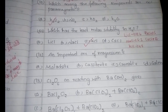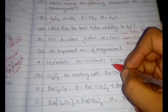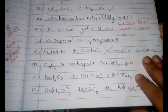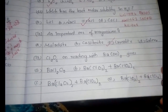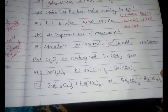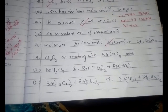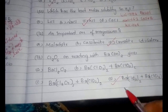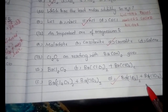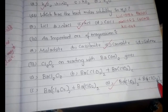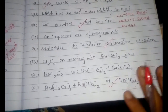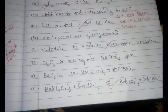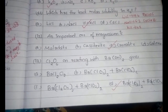The most important ore of magnesium is carnallite — learn this by heart. Next question: Cl₂O₆ reacting with BaO₂ gives which of the following as the product? The answer is option D — Ba(ClO₃)₂ and Ba(ClO₄)₂. Some reactions, like in organic chemistry, must be learned by heart.